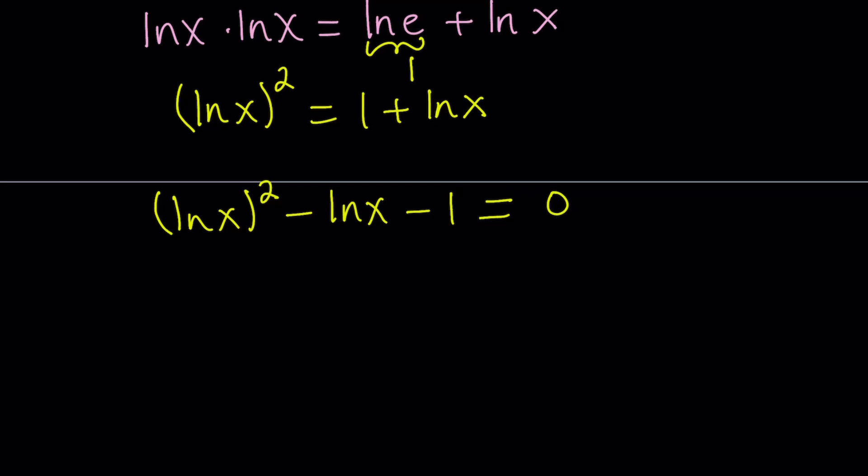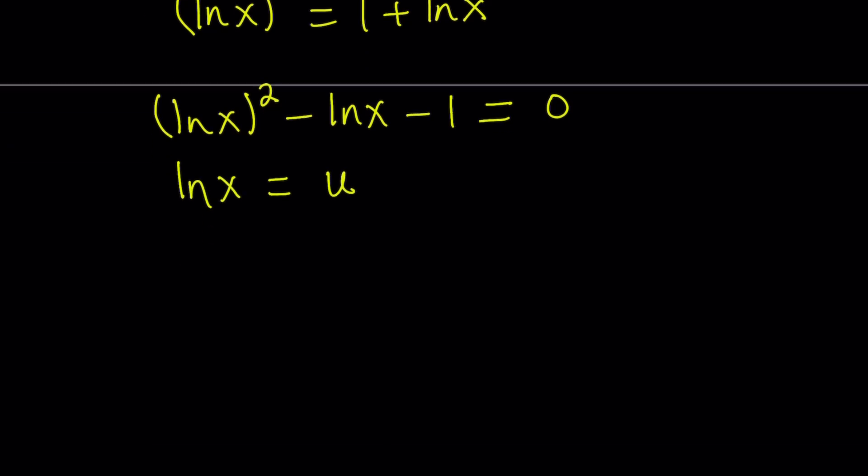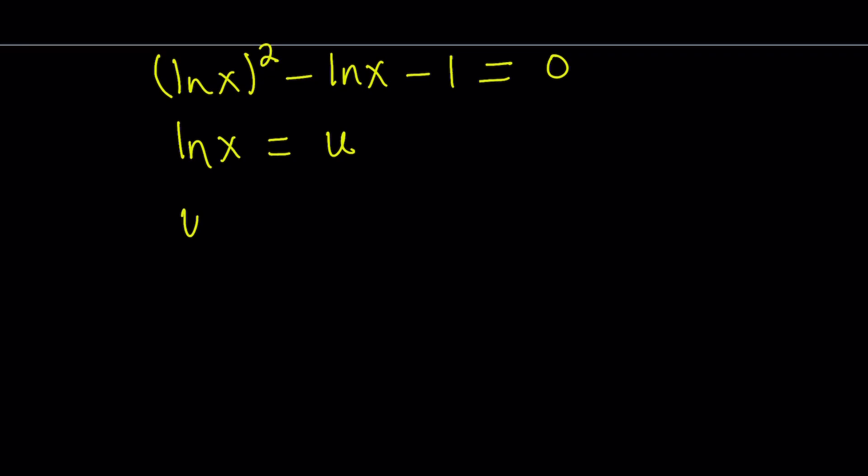Now we're going to go ahead and replace ln x with u, the letter u. And then this becomes u squared minus u minus 1 equals 0. So that's a quadratic in u. And its roots are u equals 1 plus minus square root of 5 divided by 2.